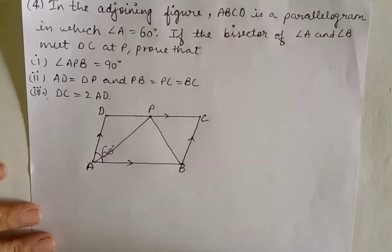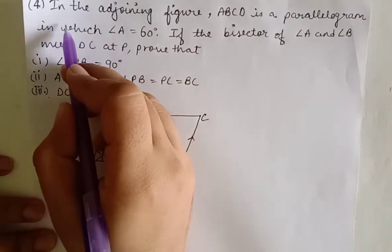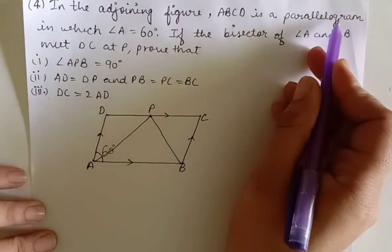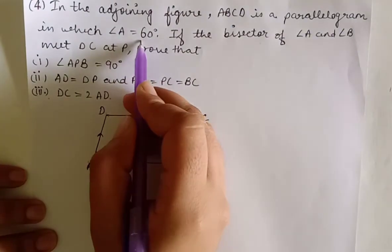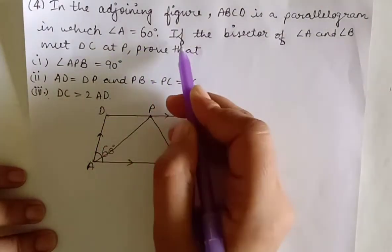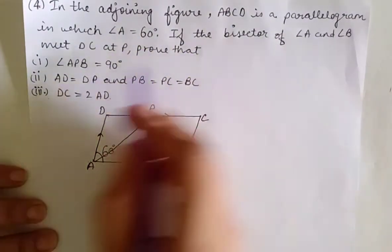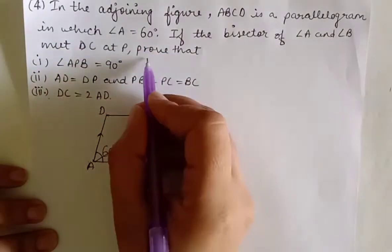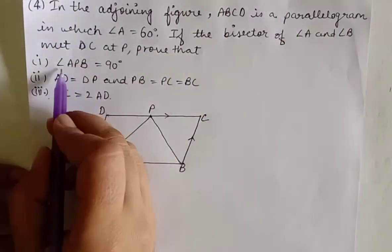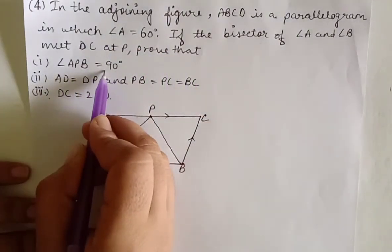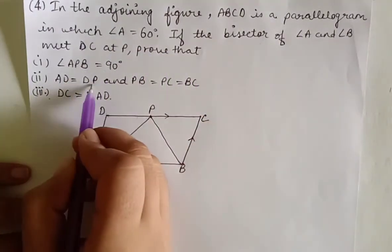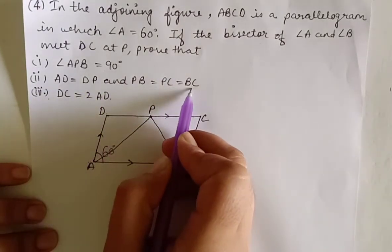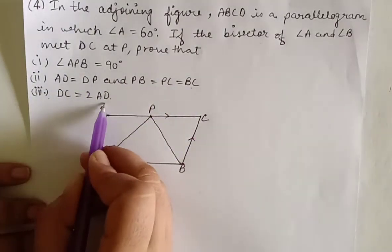This is question number 4. In the adjoining figure, ABCD is a parallelogram in which angle A is 60 degrees. If the bisectors of angle A and angle B meet DC at P, prove that angle APB equals 90 degrees, AD equals DP, PB equals PC equals BC, and DC equals 2AD.